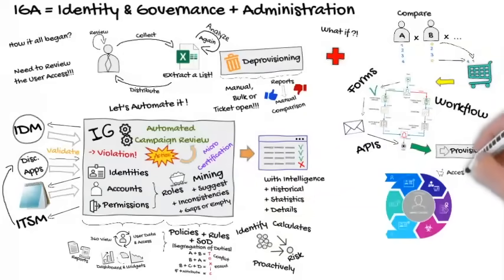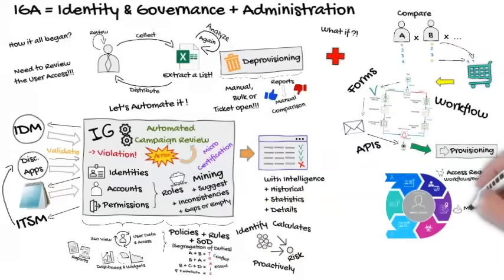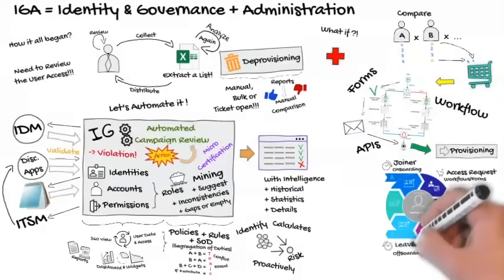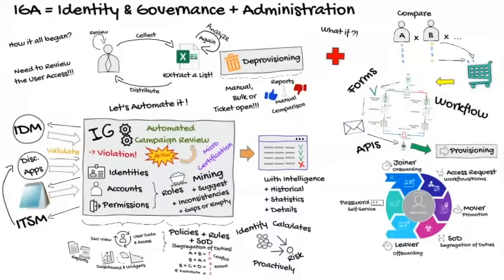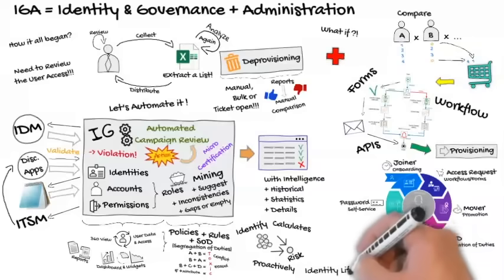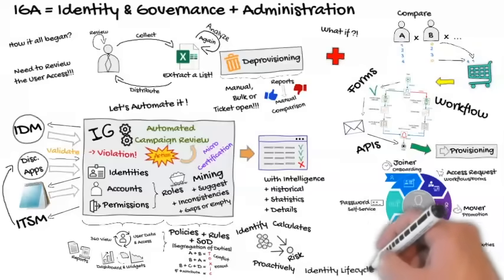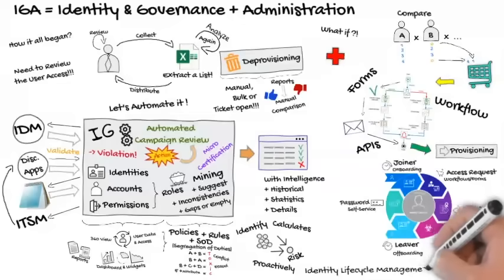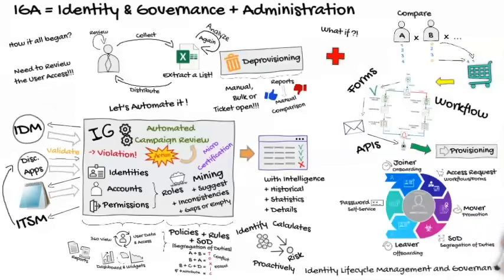Note that this capability is described in the access request of the identity life cycle. In the Move phase, we can start micro-certifications; SOD capabilities have been extended; joiner and leaver can be configured as policies or rules. The IDM is linked to the IG and automates provisioning and deprovisioning. So the IG combined with IDM can serve not only the identity life cycle, but provide additional administration and management capabilities. For this reason, the combination of IDM and IG is called IGA, or IG plus A.